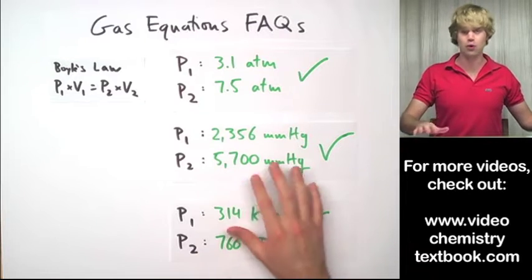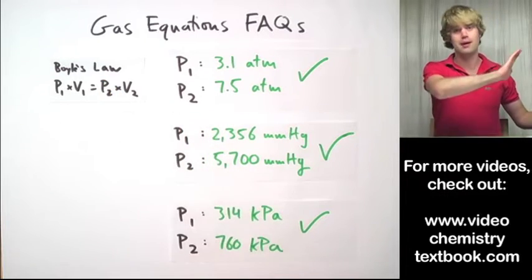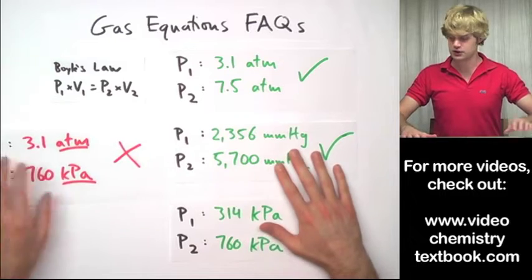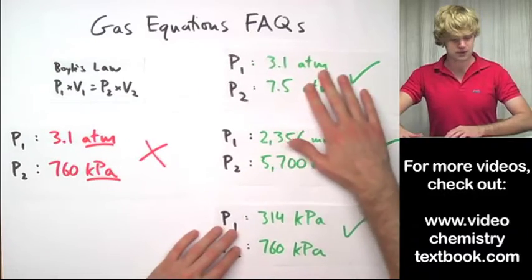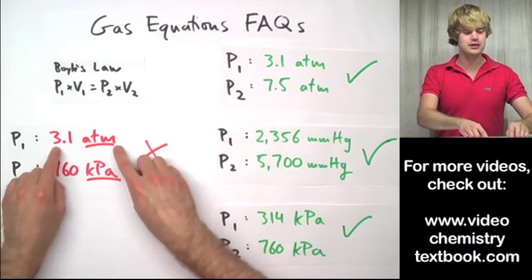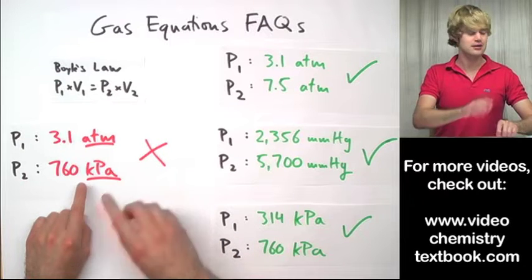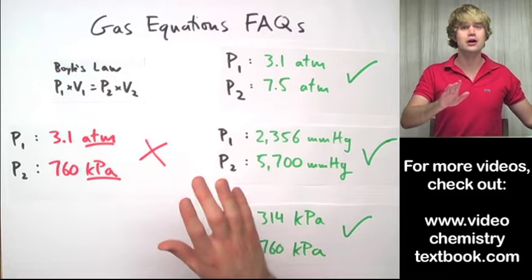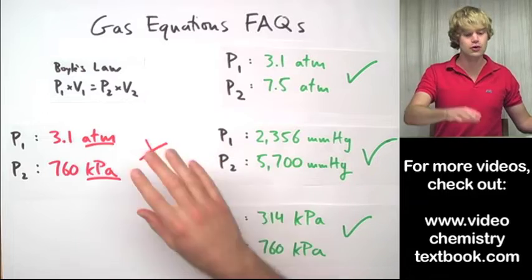Now the situation that won't work, not just for Boyle's Law but for any of the gas equations, is if you do something like this where P1 is in atm and P2 is in kPa. That is not going to work. And what you're going to have to do then is a conversion.